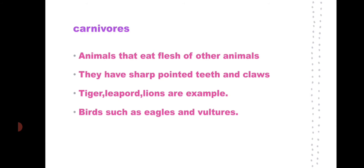Next, carnivorous animals are those that eat the flesh of other animals. They have sharp pointed teeth and claws. Predators like lion, tiger, and leopards all have sharp pointed teeth and claws. Birds such as eagles and vultures are also considered carnivores.